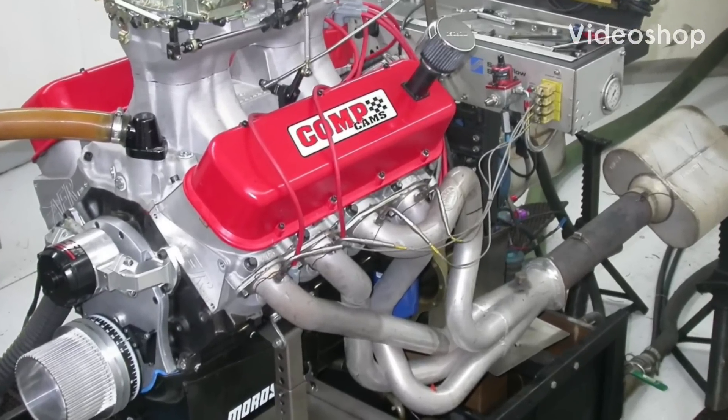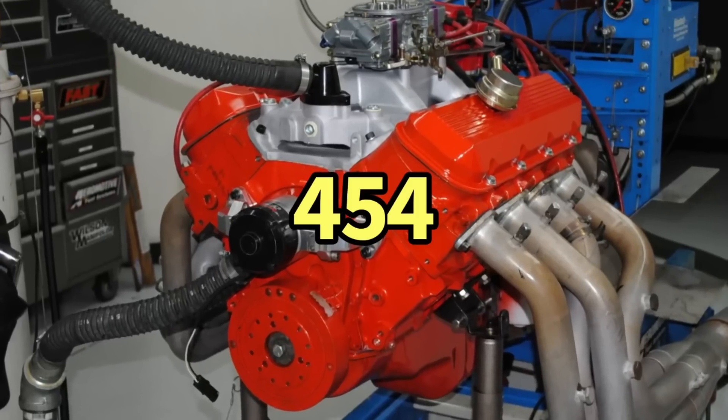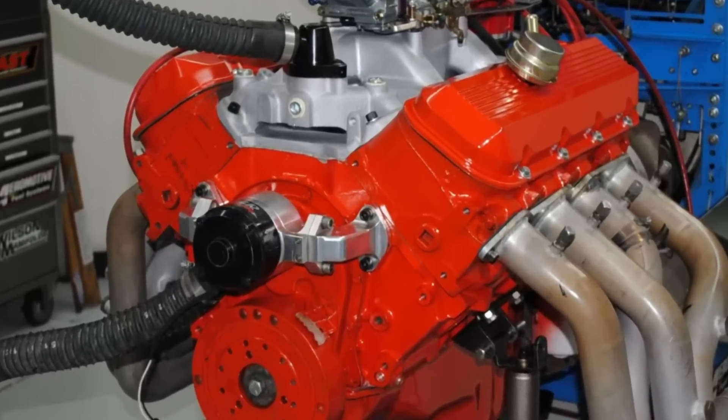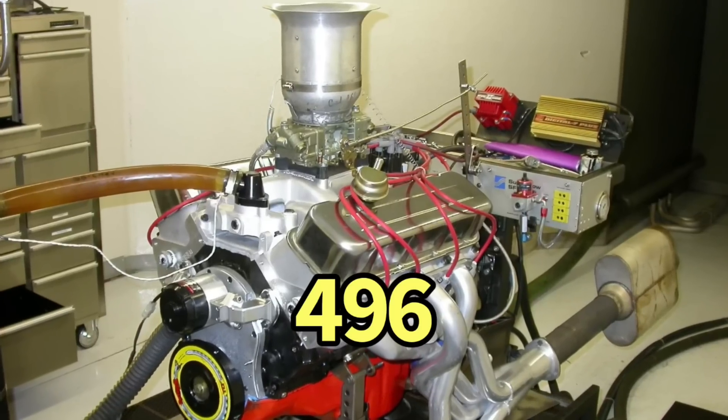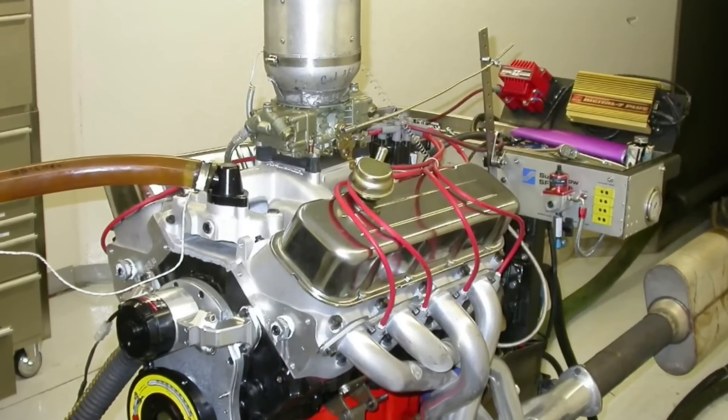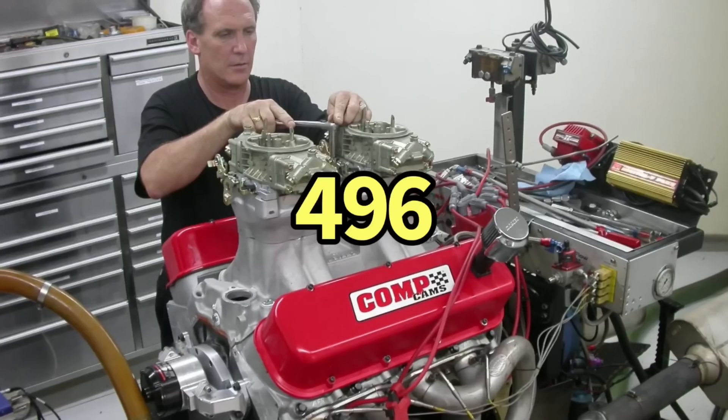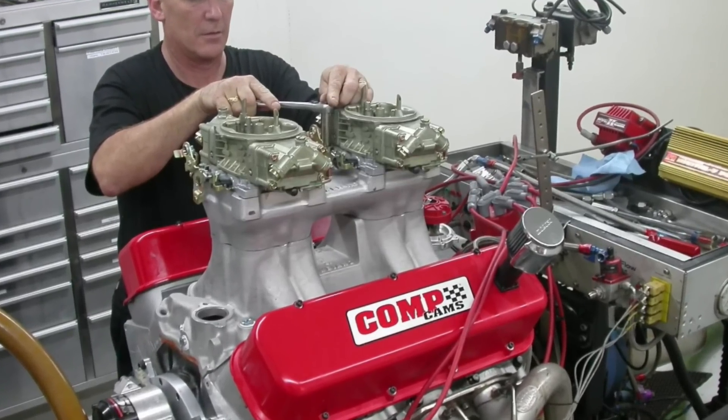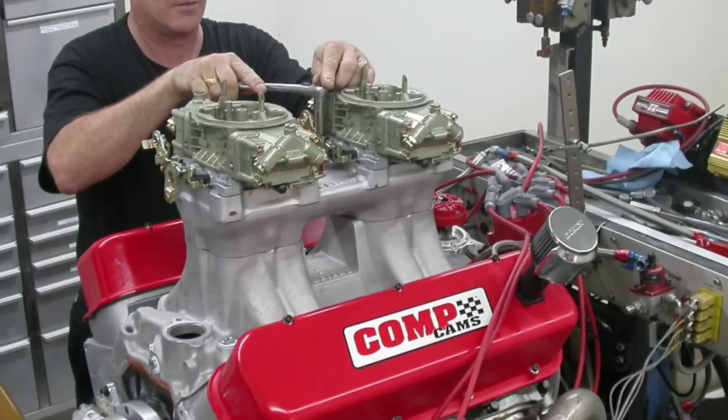Okay guys, it's time for some big block power. Let's start with a mild 454 built for towing. Then we'll step up to a 496 with aluminum heads and a bigger cam.